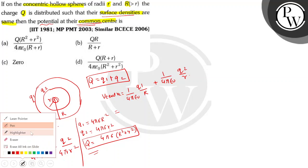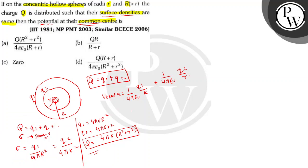V center will be sigma into 4π capital R square upon 4π epsilon 0 R, plus sigma 4π small r square upon 4π epsilon 0 small r, which will be sigma R plus r upon epsilon 0, as we have same denominator.